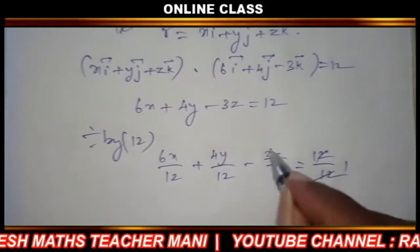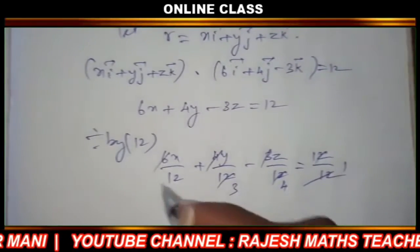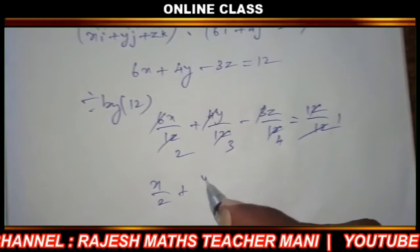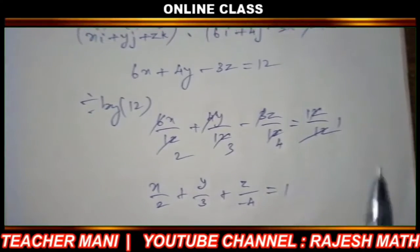So x by 2 plus y by 3 plus z by minus 4 equal to 1.